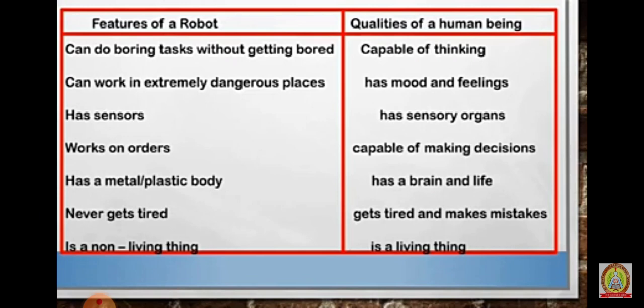Features of a robot: can do boring tasks without getting bored, can work in extremely dangerous places, has sensors, works on orders, has a metal/plastic body, never gets tired, is a non-living thing. Qualities of a human being: capable of thinking, has mood and feelings, has sensory organs, capable of making decisions.